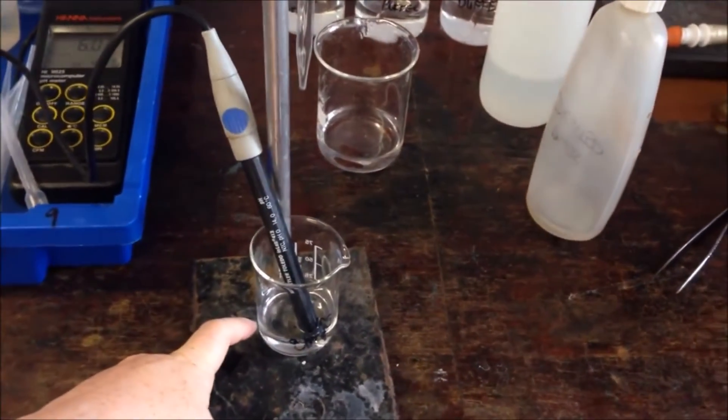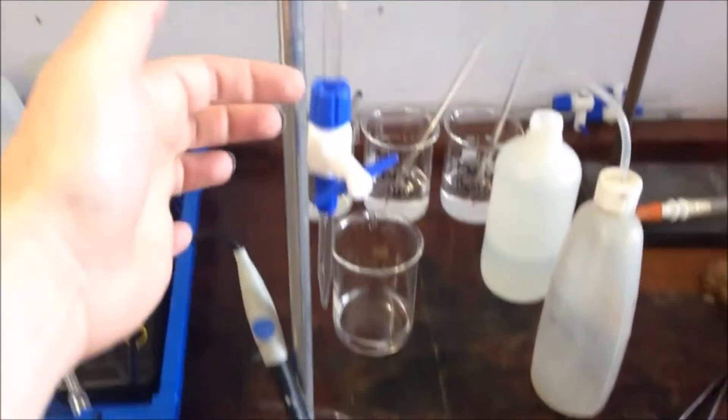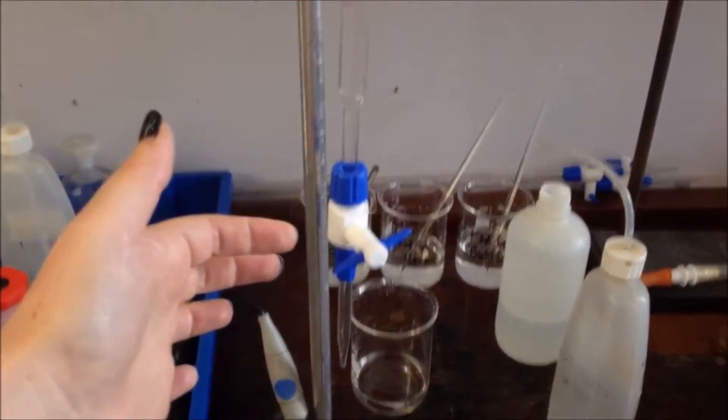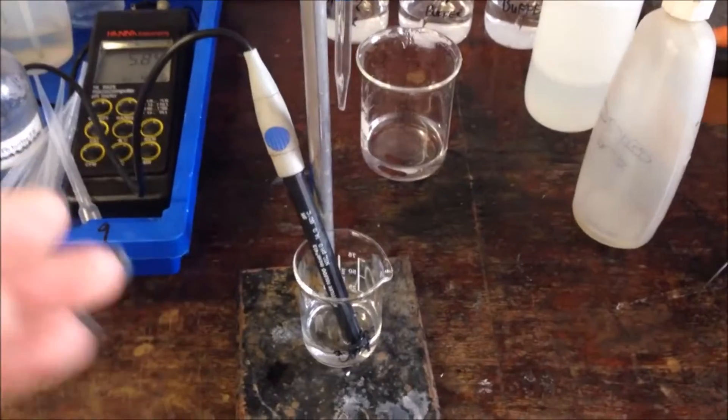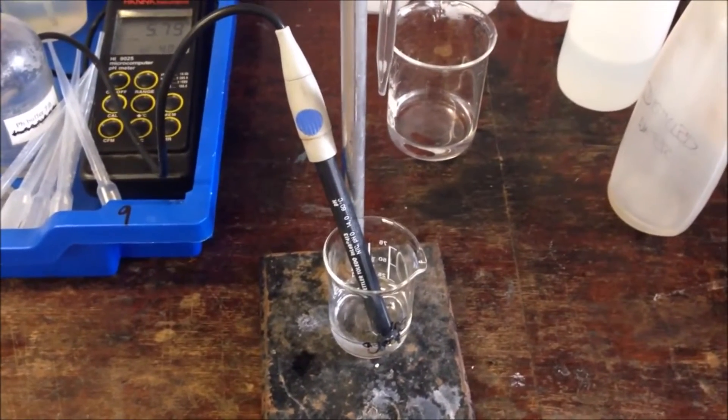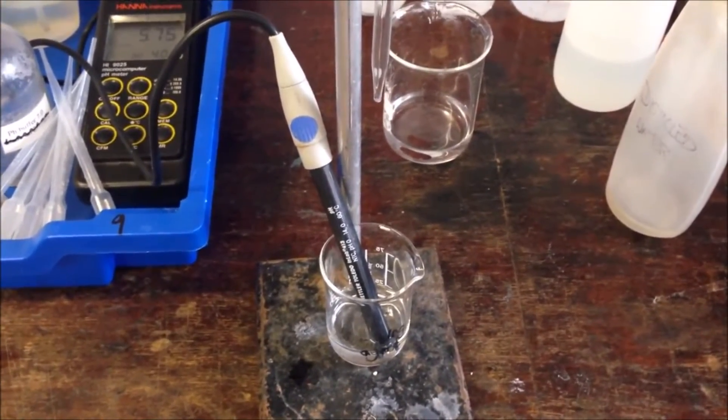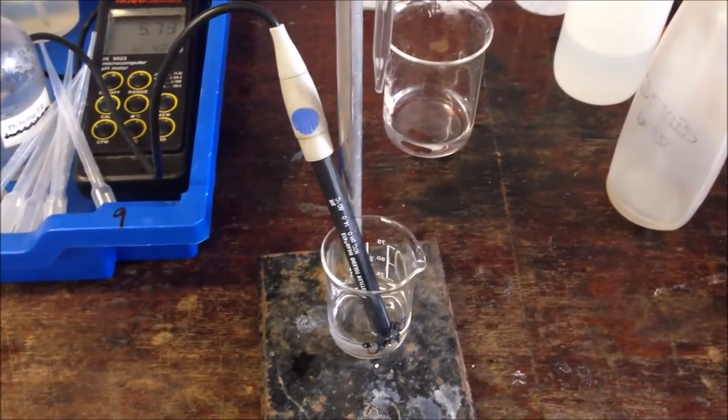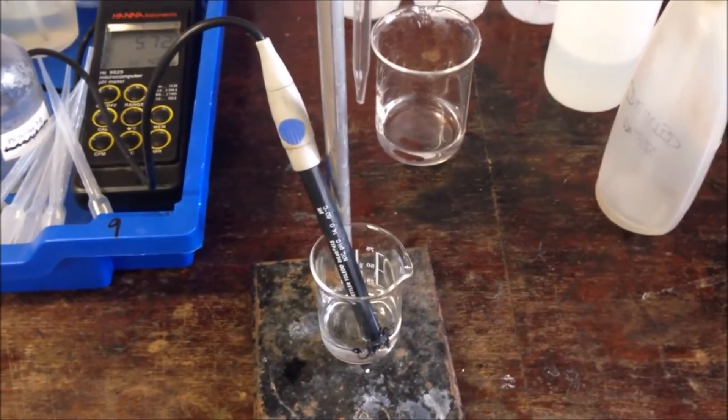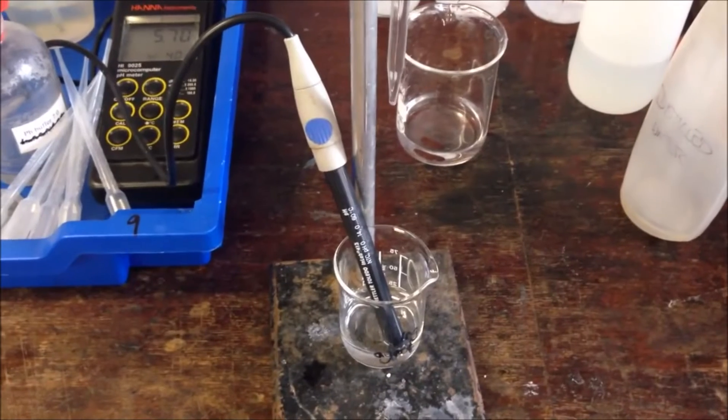So I have ethanoic acid down here in the beaker, I've got my pH probe, and in the burette above I've got sodium hydroxide. I'm going to add sodium hydroxide 2cm³ at a time and measure the pH each time something is added. You need to be constantly stirring while you're doing this and then once you've got the results you need to draw some graphs.